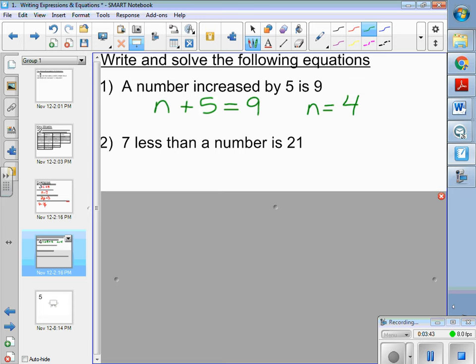Seven less than a number is 21. So your number has seven taken away from it, and it's equal to 21. So the number's got to be bigger than 21. So if you take seven and add it to the 21, you get that P is 28.